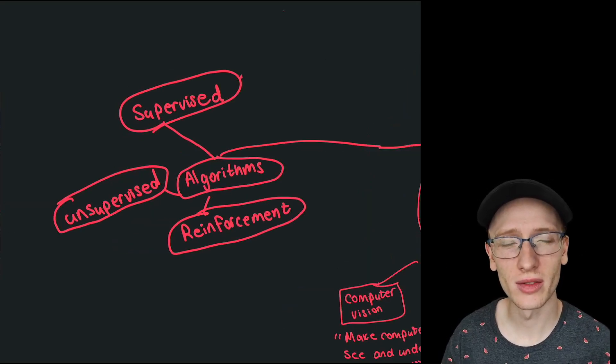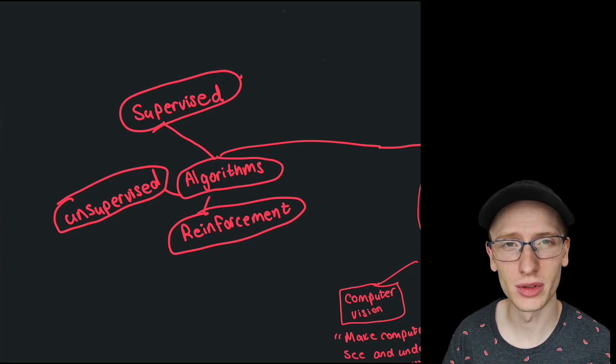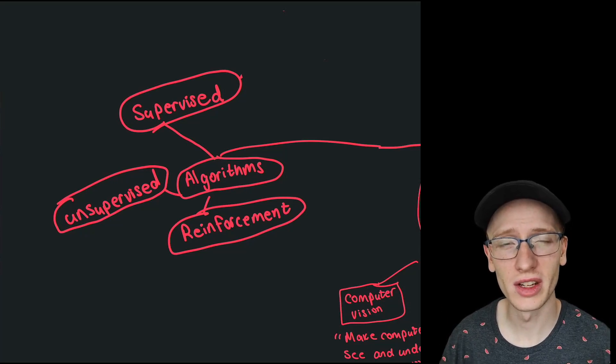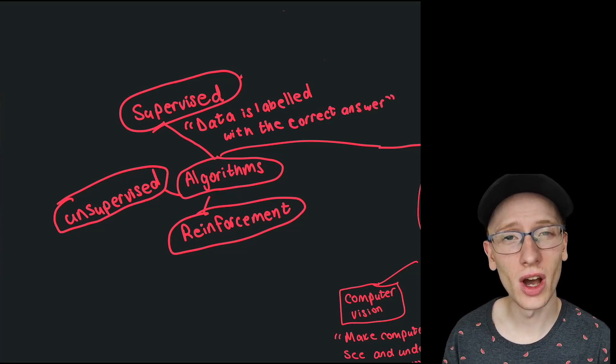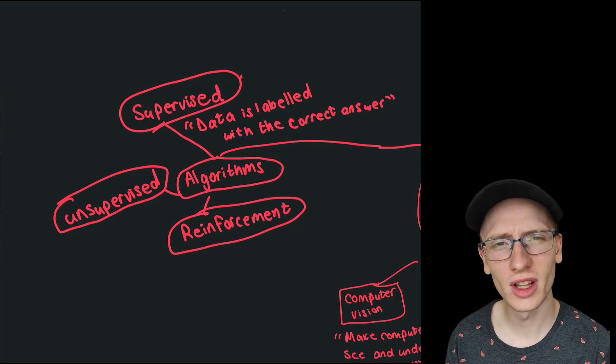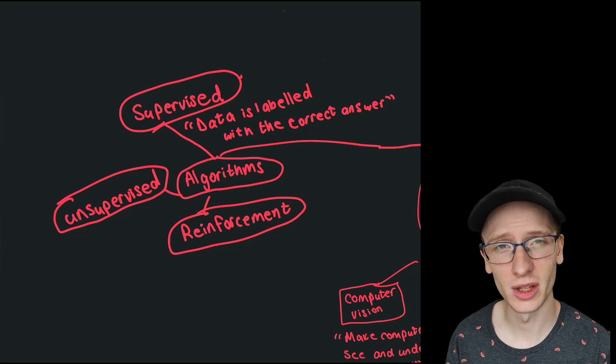Supervised learning generally means that we have labels on our training examples. We actually have a human that has specified, this is the correct answer. Unsupervised learning is generally the opposite of supervised learning, and that means we do not have labeled training examples.